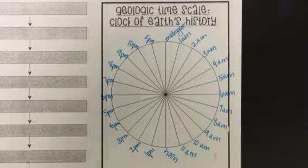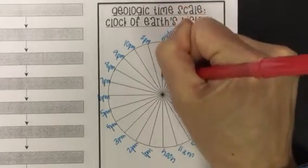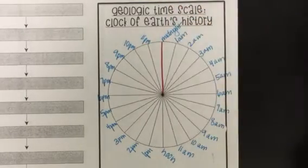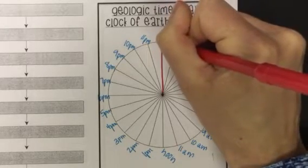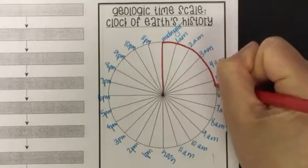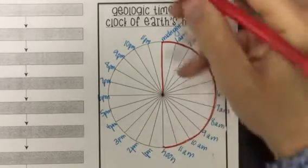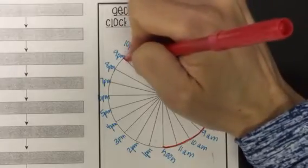We're going to start with Precambrian Time, which is our first chunk of time, so the furthest back in history. And that is going to be the largest chunk of time. So we're going to go all the way from midnight around to 9 p.m.